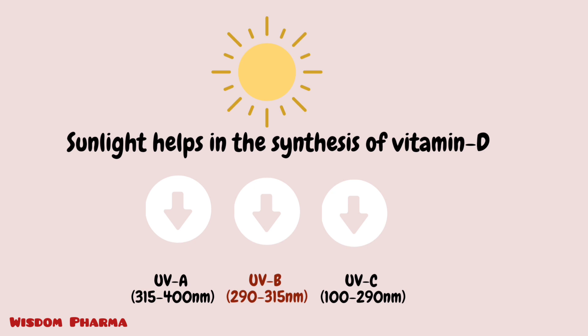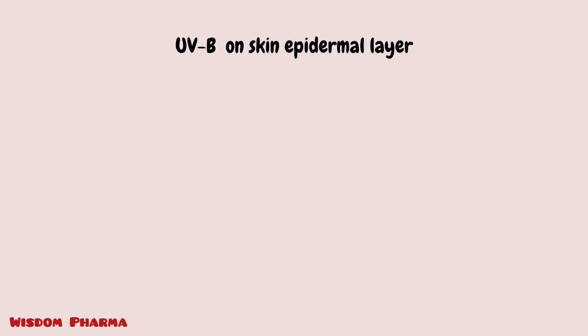UVB has a wavelength range of approximately 290–315 nm, and it is most available between 10am and 3pm. During that time window, we can get the UVB exposure needed for vitamin D synthesis. In our skin, we have the epidermal layers, and within the epidermis we have 7-dehydrocholesterol.